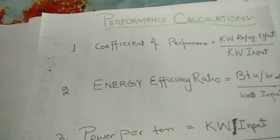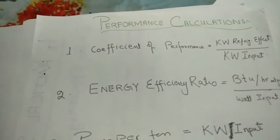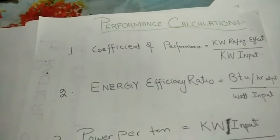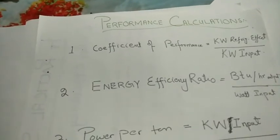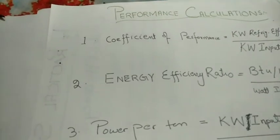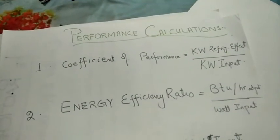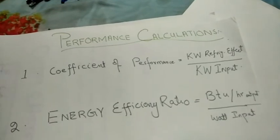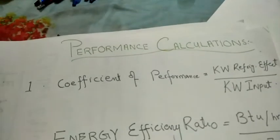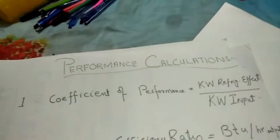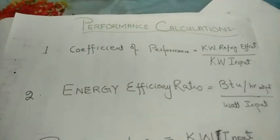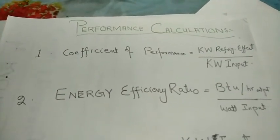Now, after we have learned what net refrigeration capacity is in tons of refrigeration and how to calculate power input, we discuss the terms of performance. Number one: the Coefficient of Performance (COP). COP is basically the output in terms of kilowatts of refrigeration effect divided by the input in terms of kilowatts.